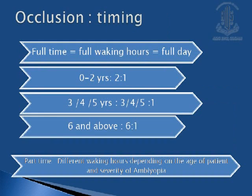When starting occlusion therapy for full time — meaning full waking hours in the day — the regimen depends on the age of the child. When the child is 2 years of age, the good eye should be patched for 2 days and the amblyopic eye for 1 day. Similarly, in children aged 3, 4, or 5 years, the ratio should be 3:1, 4:1, or 5:1. For part-time occlusion, different waking hours of patching should be done depending on the age of the patient and severity of the amblyopia.